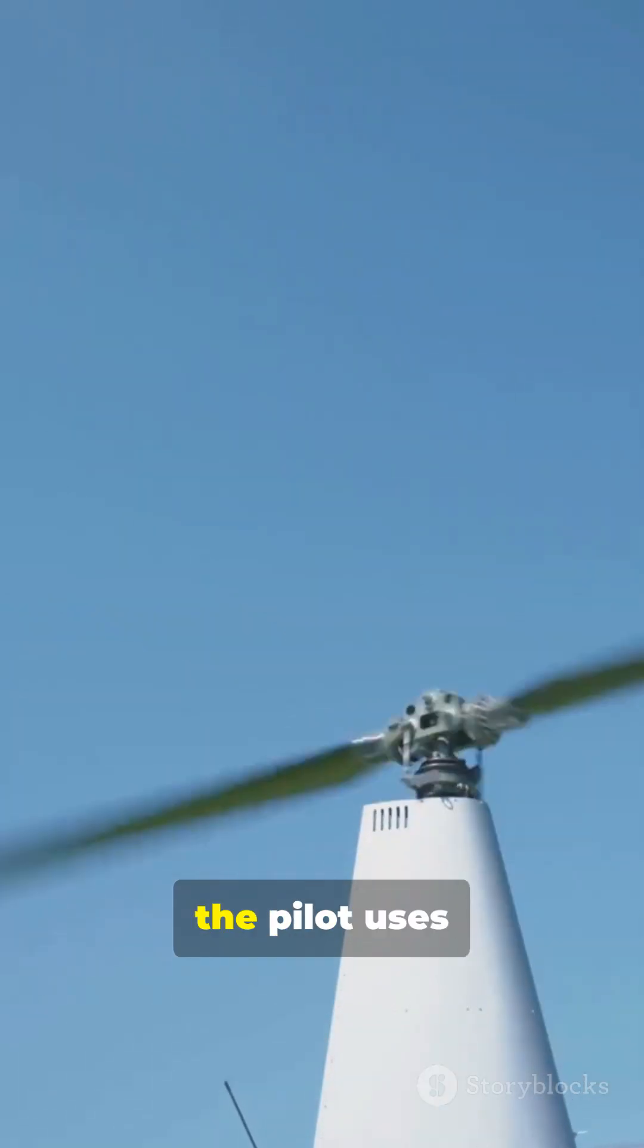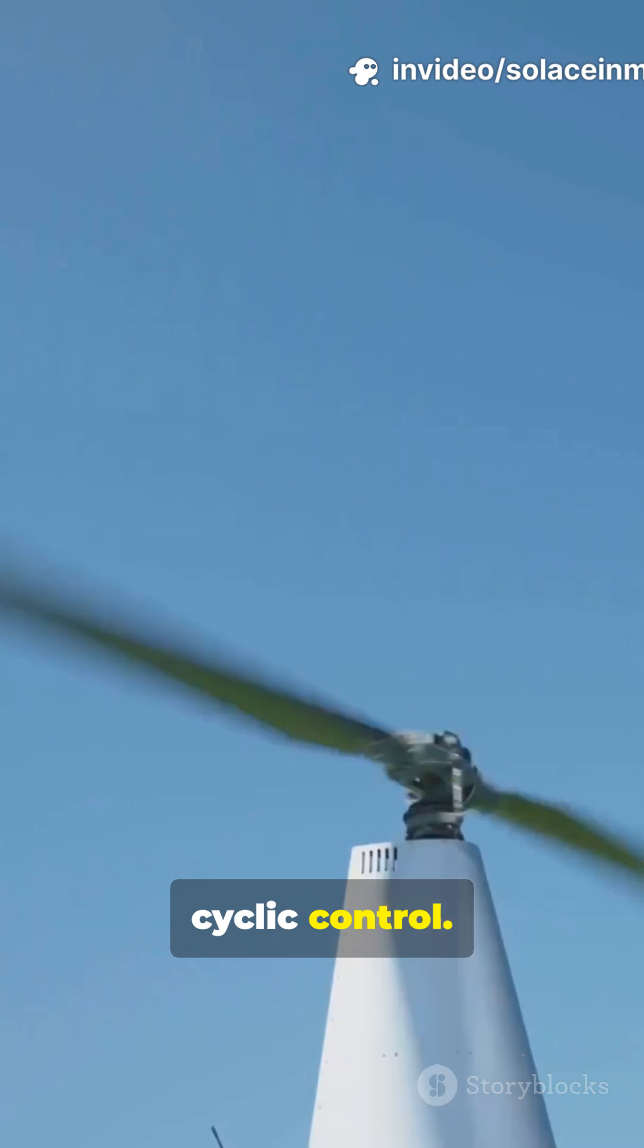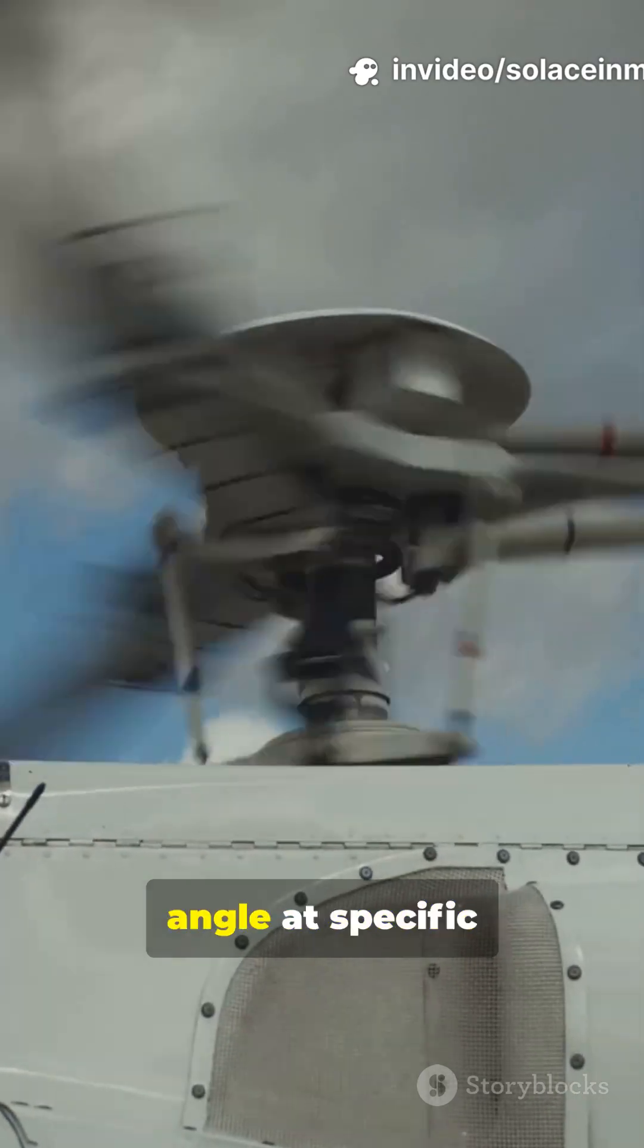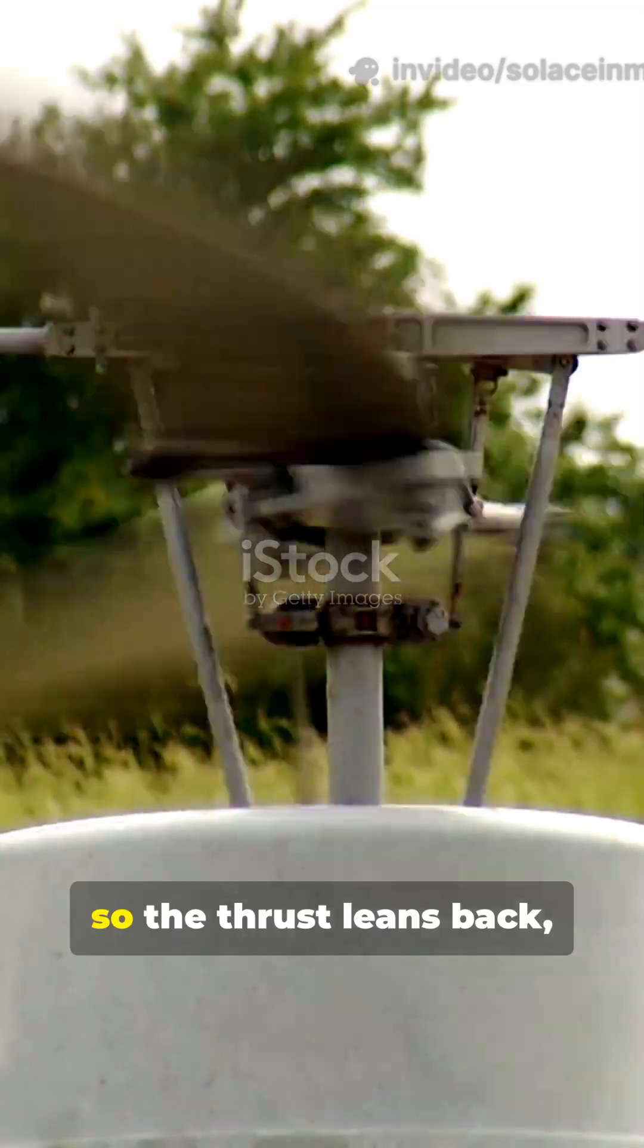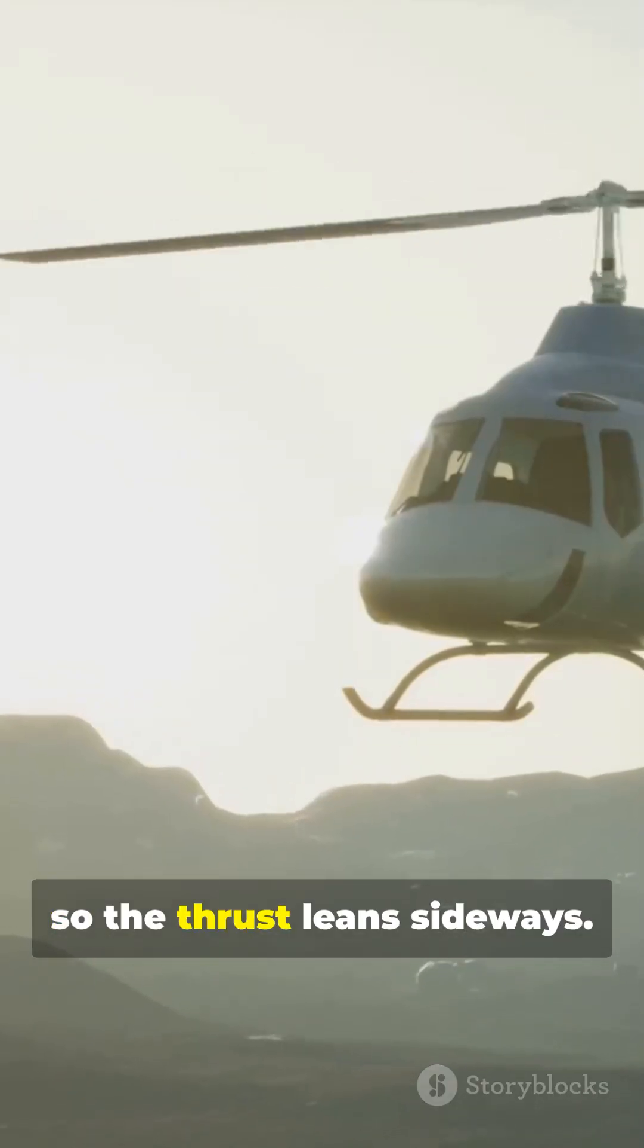To tilt or move, the pilot uses cyclic control. This changes blade angle at specific points in the rotation, so the thrust leans forward, so the thrust leans back, so the thrust leans sideways.